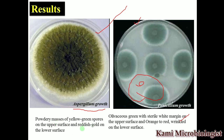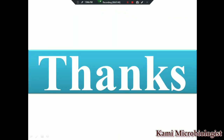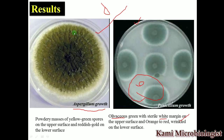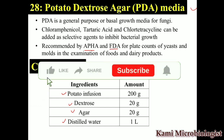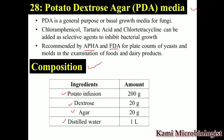Penicillium species show an olive-green color with a sterling white margin on the upper surface, and an orange-red wrinkled appearance on the lower surface. This is all about the growth of fungi using PDA media. I hope you got an idea about this — thank you so much for watching.